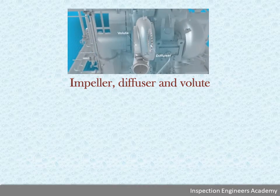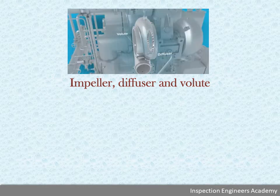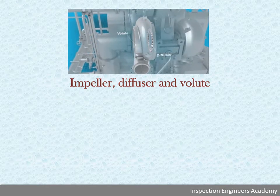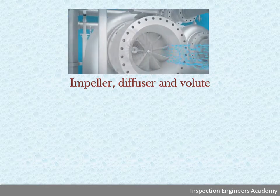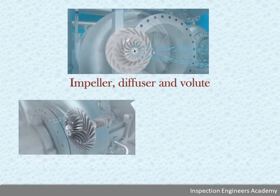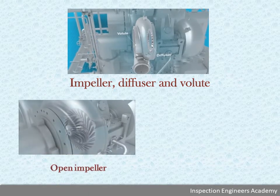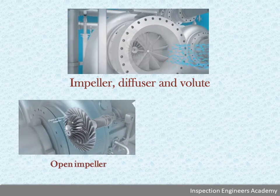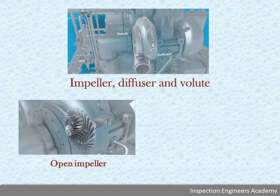The impeller consists of a backing plate, a disc with radial vanes attached to the disc from the hub to the outer rim. Impellers may be either open, semi-enclosed, or in a closed design.